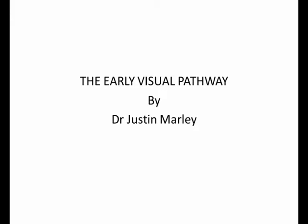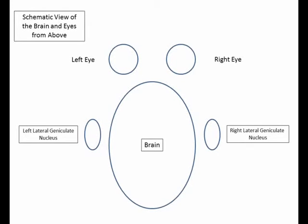I'm just going to talk you through the early stages of human visual processing in a very simple schematic. So first of all, I'm just going to explain this diagram here. This is a diagram of a human brain with eyes and the lateral geniculate nuclei.